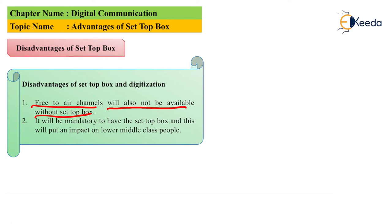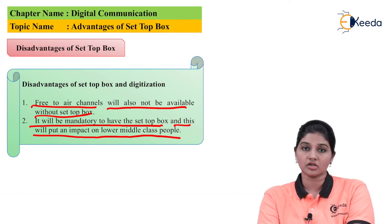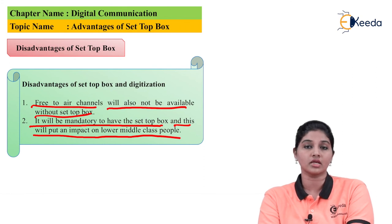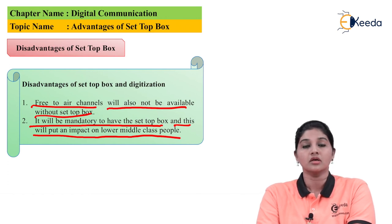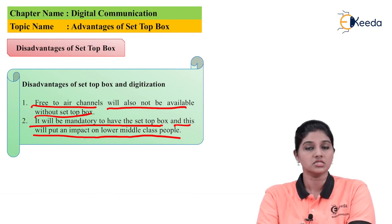The next disadvantage is that it will be mandatory to have a set-top box, and this will put an impact on lower middle class people. The cost of the set-top box is a factor when selecting one, as well as when selecting the number of packages or channels the user wants to view. Depending upon the user requirement, it is not possible for everyone to buy high-definition channels, which is also considered a disadvantage of the set-top box.